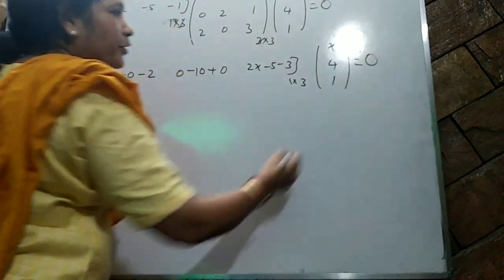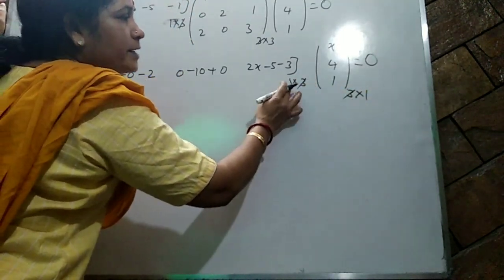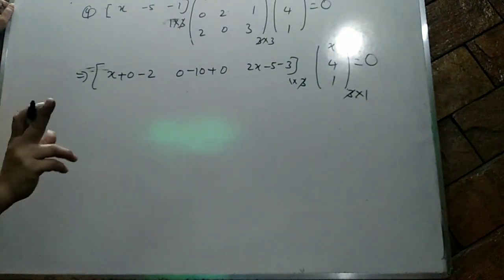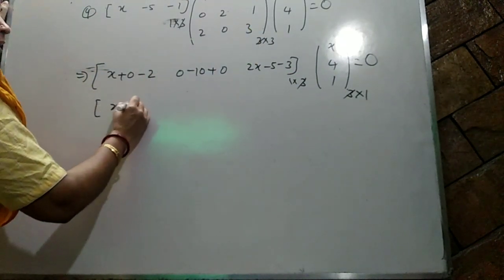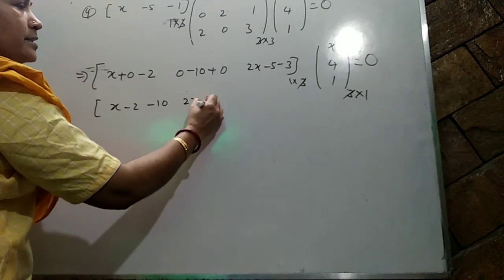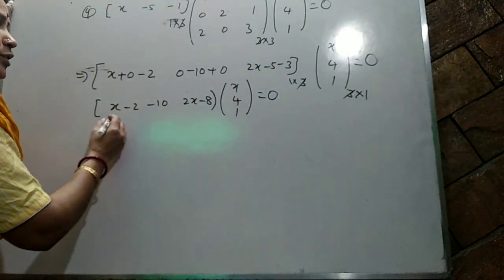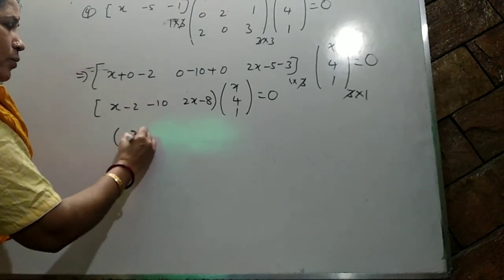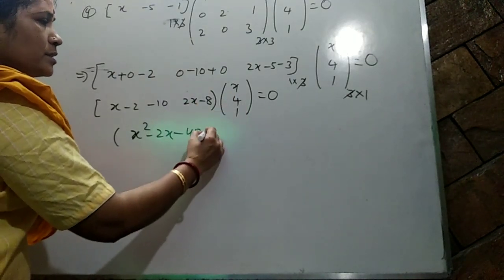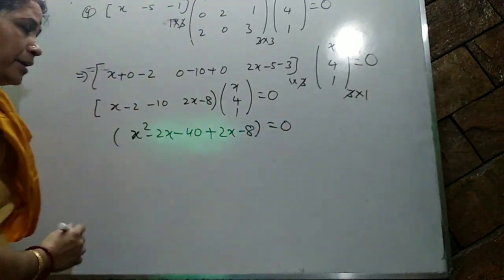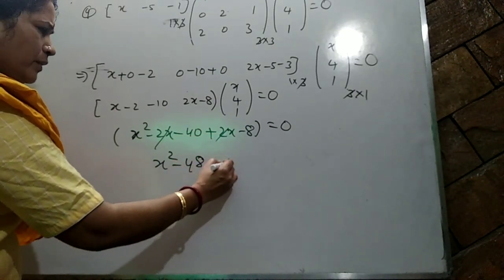So we get [x-2, -10, 2x-8] times [x; 4; 1] equals null matrix. Multiplying: x(x-2) minus 40 plus (2x-8) equals 0. Expanding: x² minus 2x minus 40 plus 2x minus 8 equals 0, which gives x² minus 48 equals 0.